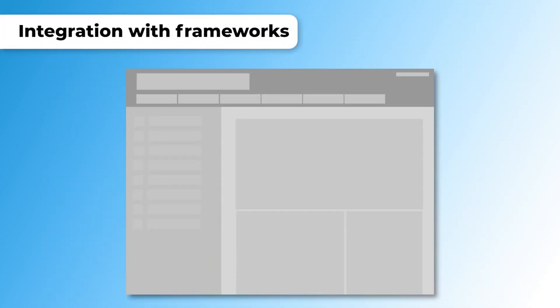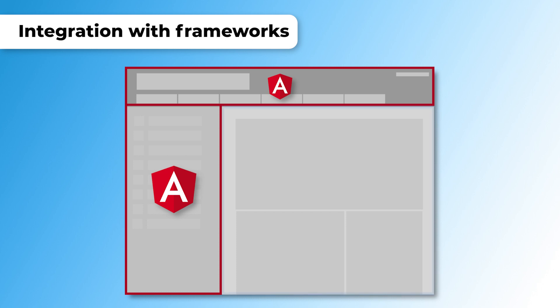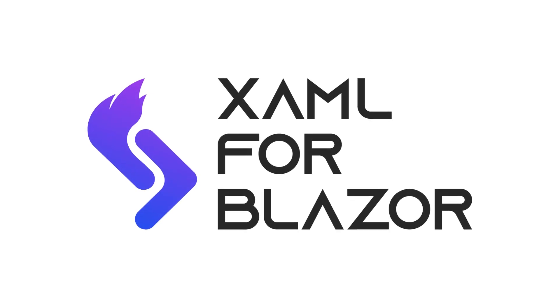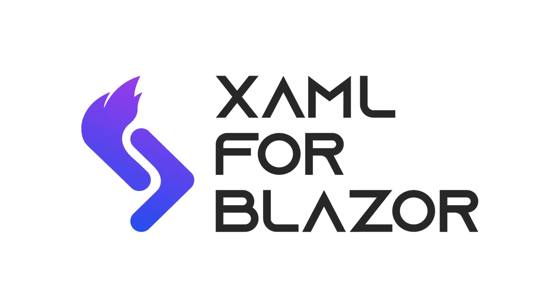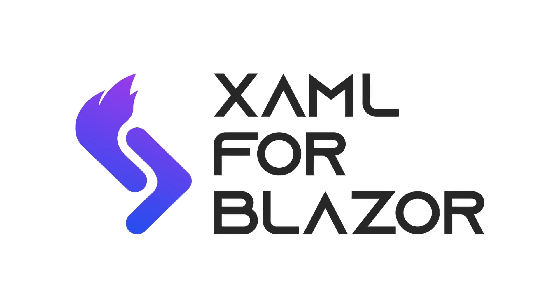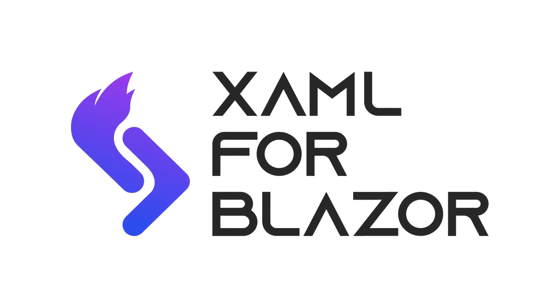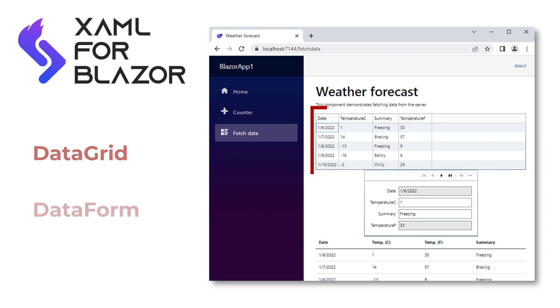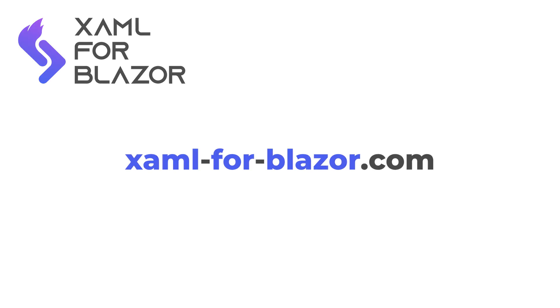Next: frameworks integration. OpenSilver 2.0 works great with popular web frameworks like Angular and React. This means you can have apps that are partially crafted in Angular, for instance, and partially in OpenSilver. And for Blazor developers, we have something special too. We have recently introduced XAML for Blazor, which allows you to add OpenSilver to your Blazor WebAssembly projects easily and without starting from scratch. Razor files and XAML files can coexist side by side in the same Blazor project. You can pass objects around, subscribe to XAML events from your Blazor code, and so much more. Learn more at XAMLforBlazor.com.